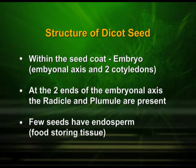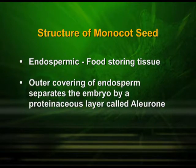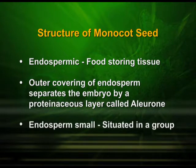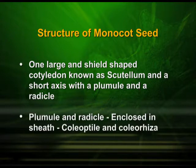Few seeds have endosperm. Endosperm is the food storing tissue. Structure of a monocotyledonous seed: most monocotyledonous seeds have endosperm, that is, they have the food storing tissues in them. They have an outer covering of endosperm that separates the embryo by a proteinaceous layer called aleurone. The endosperm is small and situated in a group. One large and shield-shaped cotyledon known as scutellum and a short axis with a plumule and radicle is found. The plumule and radicle are enclosed in a sheath known as the coleoptile and coleorhiza.